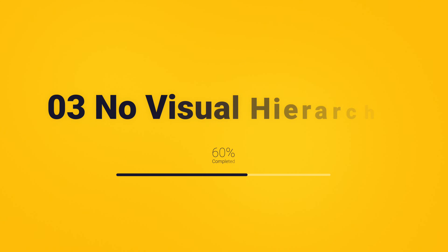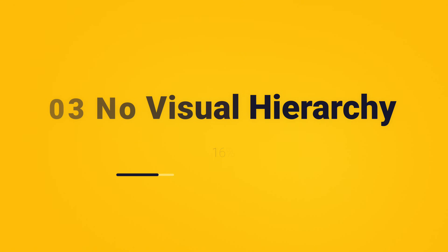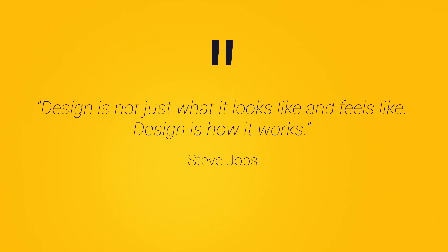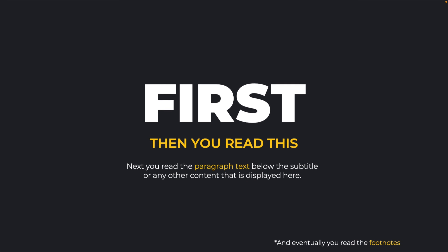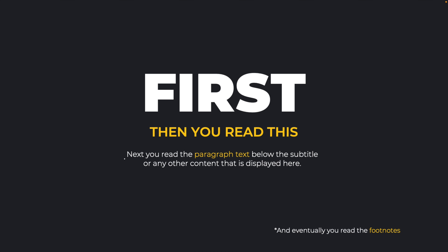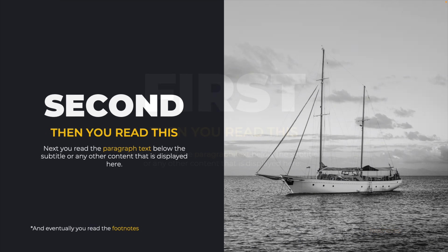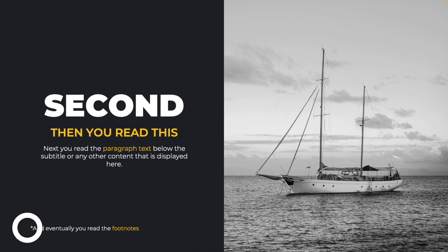That brings us to mistake number three: no visual hierarchy in your slides. As Steve Jobs said, 'Design is not just what it looks like and feels like — design is how it works.' There's a fixed way we read slides: first the large word, then the subtitle in yellow, then the paragraph below, then the footnotes. With an image, you see the image first, then the title, subtitle, paragraph, and footnotes. So you're really in control of how content is placed and read.